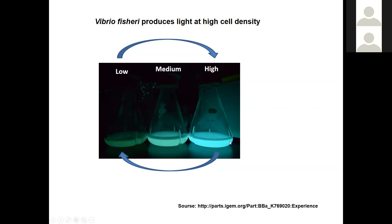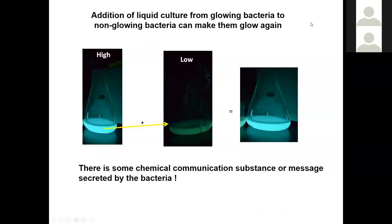Scientists did a clever experiment. They hypothesized that the light-producing substance or message only comes at a high cell density. They took the spent medium — the culture medium of the bacteria — and put it into non-communicating bacteria, and again they started to communicate. This indicated that there is a chemical substance produced at high cell density only, and that this substance helps synchronize light production. When they added the supernatant to low-cell-density bacteria, those bacteria started producing light, confirming chemical communication.